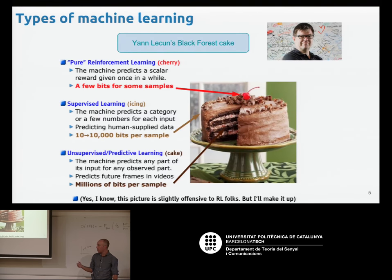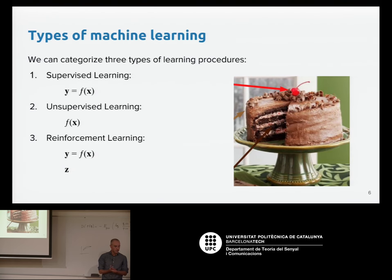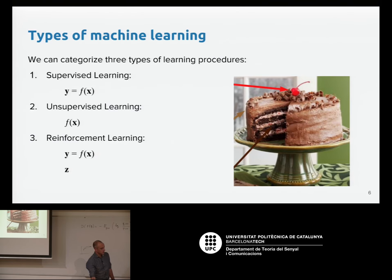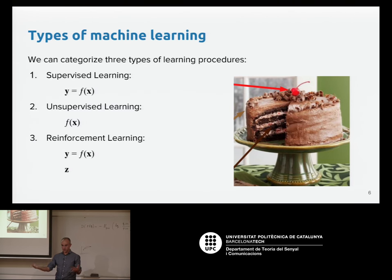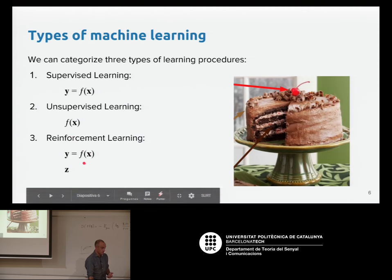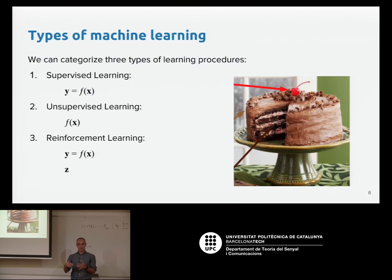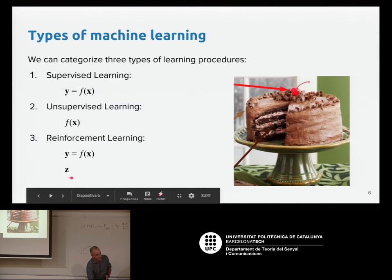A more formal definition: supervised learning is when we aim at predicting a function F that maps input data into another output space — typically labels, for example in classification. In unsupervised learning you don't have labels at all; you just have lots of data and want to model that data distribution. In reinforcement learning, you want to learn a function and you have some labels, but you're not interested in the mapping itself — you want to solve another task Z.